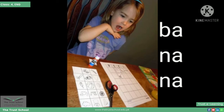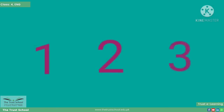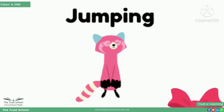Isliye banana word ke three syllables hain. Syllables may be one, two, three, or more than three. Here are the one-syllable words: win, cab, bug, wig, cow, dead — all these words have one syllable.